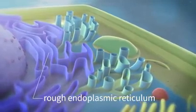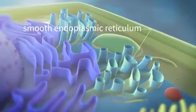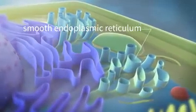It has the shape of a labyrinth surrounding the nucleus. One part of the ER is called rough and the other, smooth endoplasmic reticulum.